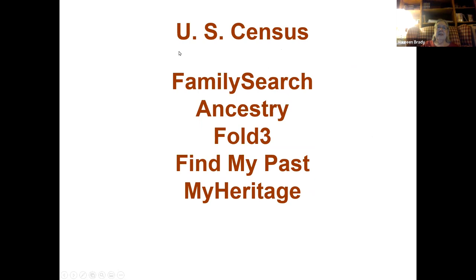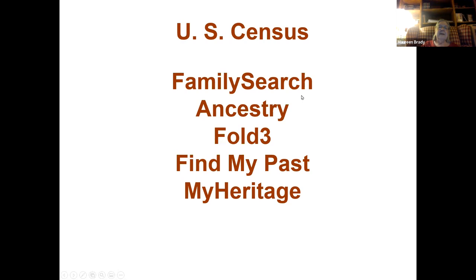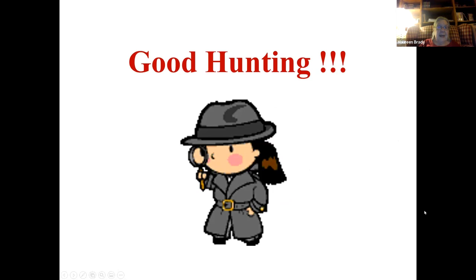Finally, check multiple sites. Every one of them is indexed separately. The U.S. Census, for example, is on FamilySearch, Ancestry, Fold3, FindMyPast, and MyHeritage — all with different indexes, indexed through different methods. You might find it on Fold3 and nowhere else because the handwriting wasn't read correctly, or somebody didn't understand cursive. If the first site doesn't work and it's available on another site, go try it there too — especially if you're in a public library or Family History Centers where you have access to subscription sites. Good hunting.